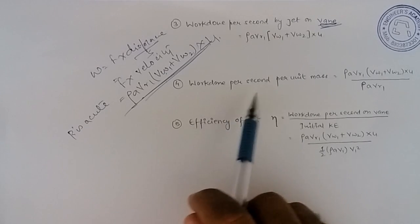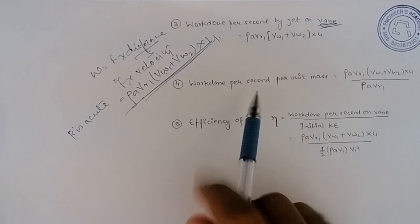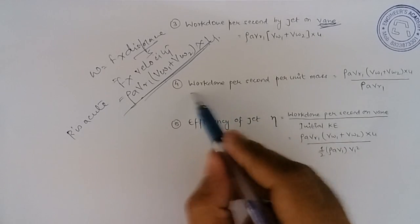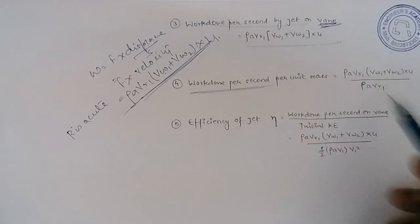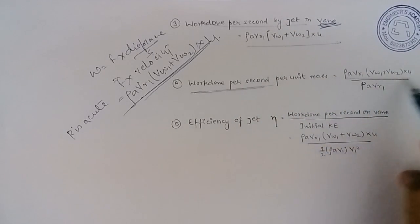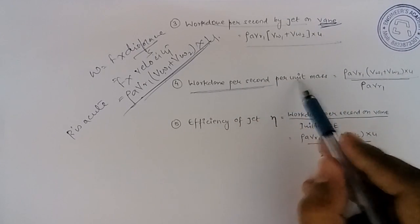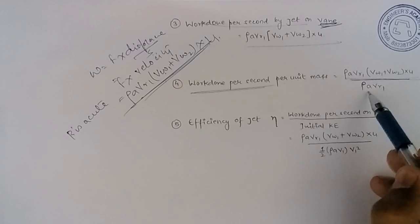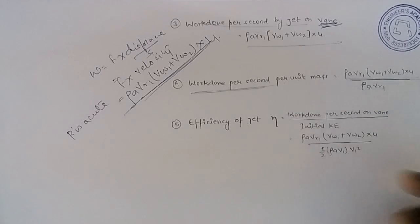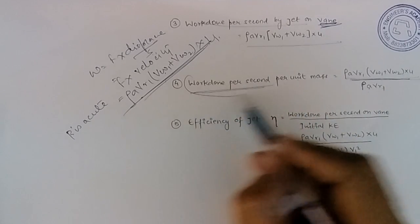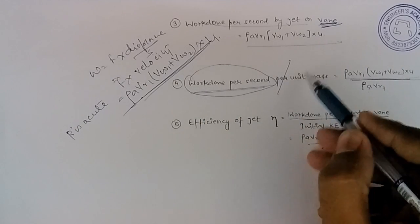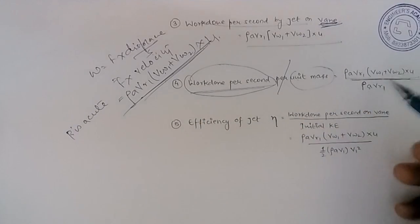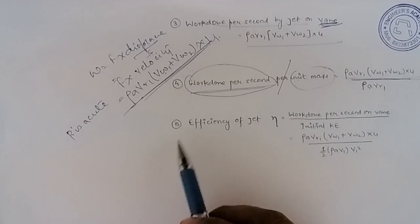The next formula is work done per second per unit mass. Work done per second is the same formula as above, and dividing by mass — which is ρ × A × vr1 — gives the work done per second per unit mass. This formula is straightforward.